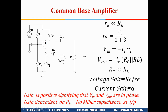V-in equals minus IE times RE. I use a minus sign to avoid confusion about the assumed direction of IE. The output voltage is IC times (RC parallel to RL). If we assume a very high load, we can neglect RL and the output is simply IC times RC. So the voltage gain is RC divided by RE.